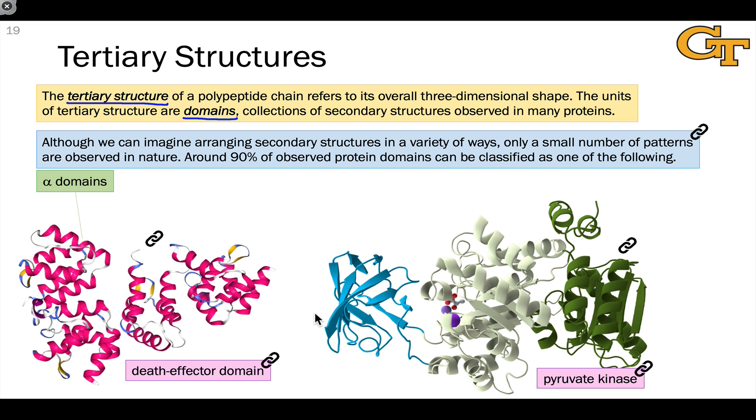In the enzyme pyruvate kinase, we see the other two types. First, in blue, we have a beta domain, a domain that consists mostly of beta sheets with a few unstructured regions where the strands wrap around. We also have in this enzyme mixed alpha-beta domains where alpha helices and beta sheets come together to form higher level structures. Here again with the beta and alpha-beta domains, there are specific examples of how these secondary structures combine to form specific domains, and these have various names like the barrel, the beta barrel, so on and so forth.